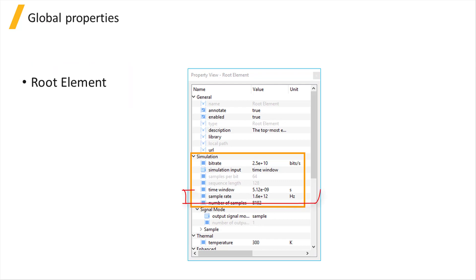We have already seen that the sampling rates for both optical and electrical sources are inherited from the root element by default. The exception is the ONA, where the sample rate is defined locally by default using the frequency range parameter.